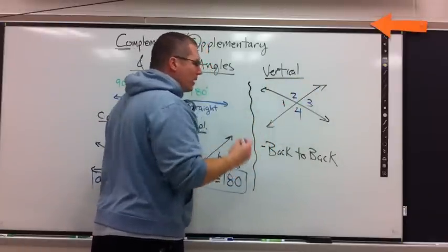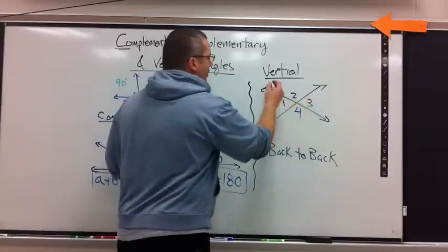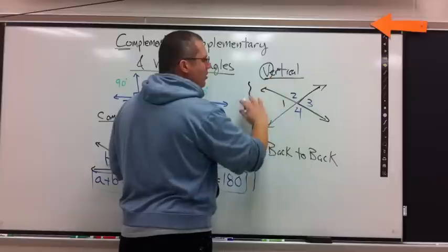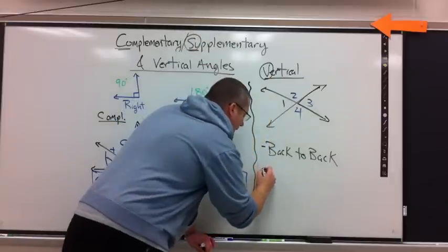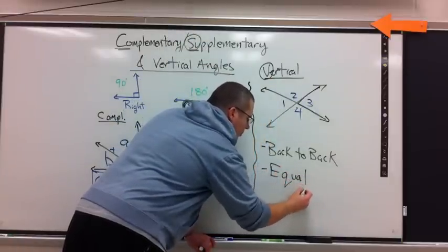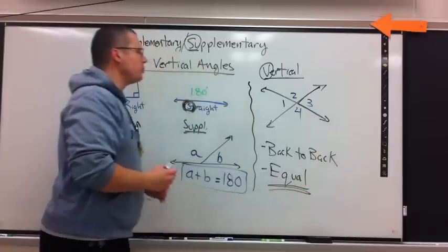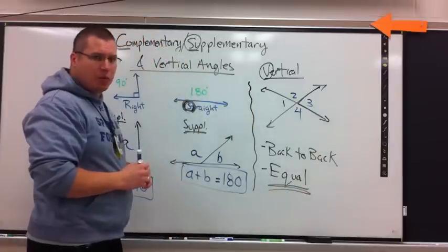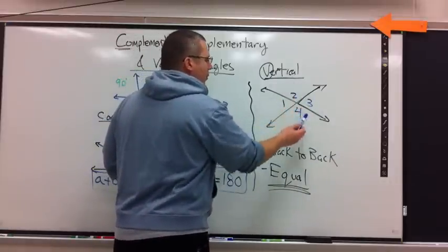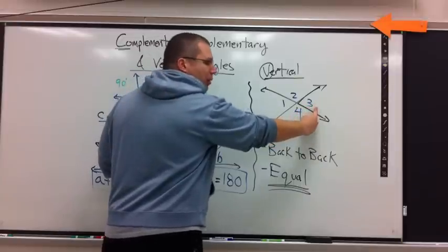Vertical means back-to-back. Which angles are back-to-back? Now, what's nice about this is the letter V makes a V here. And then you have to find the mirror image of the other V that is back-to-back with it. The big thing with vertical angles is they're equal or congruent. Either way you say it. Okay, so I have angle one, two, three, four.